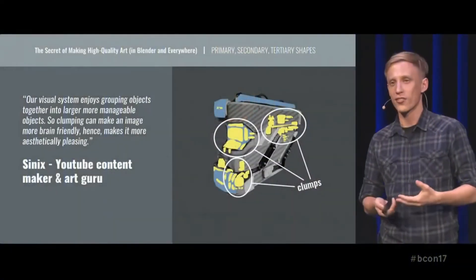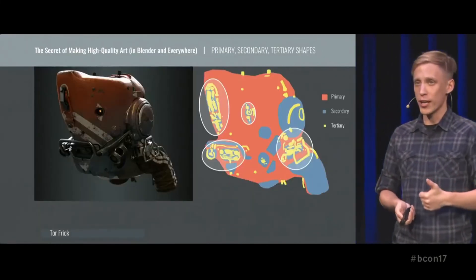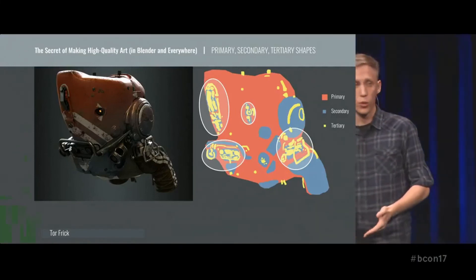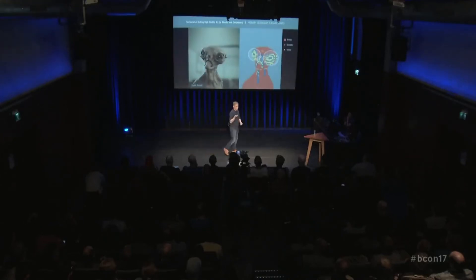That's the fourth and final hallmark of high-quality art for today. As Cynix, the YouTube design genius, points out: our visual system enjoys grouping objects together into larger, more manageable objects. Clumping can make an image more brain-friendly, hence more aesthetically pleasing. There is universal agreement from pixel art nerds to photographers: having points of interest is good for composition, and it's better to have three, five, seven, or nine objects rather than lots of objects — it's just a better way of organizing space and guiding the viewer's eye. If you follow through all the steps of this tutorial, you will get this as a bonus.